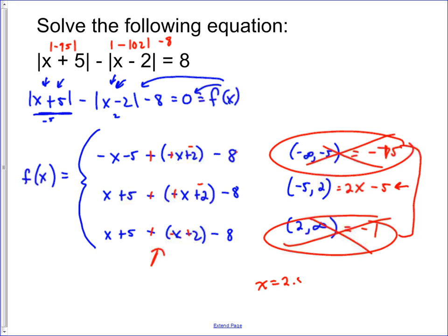However, since x equals 2.5 is not in the required region, we are inside this interval. That means that it does not actually have a zero in that interval. So it turns out that the solution to this equation is no solution. There is no value for x that makes this equation true. And that's because on all three intervals, there's no value that is a zero in those intervals.